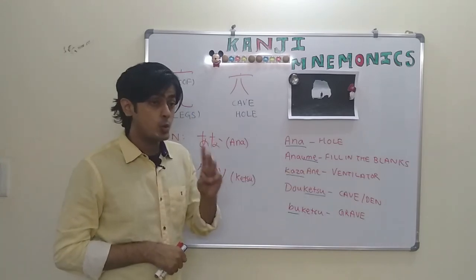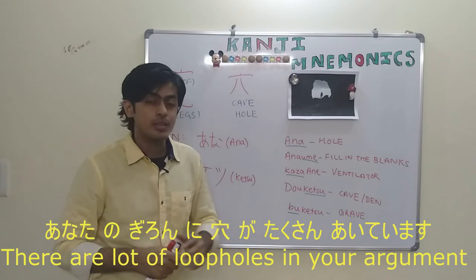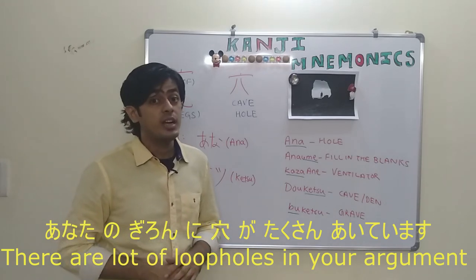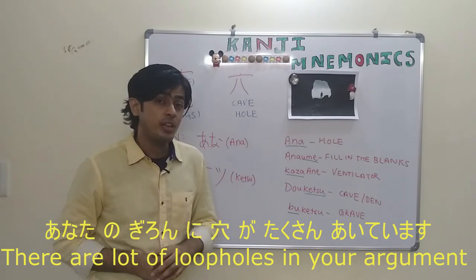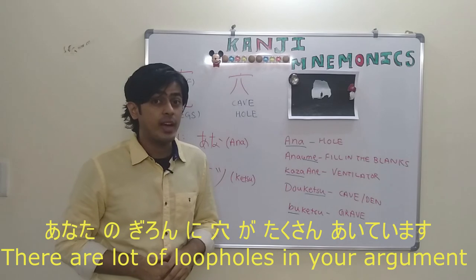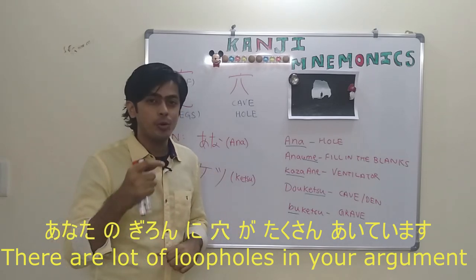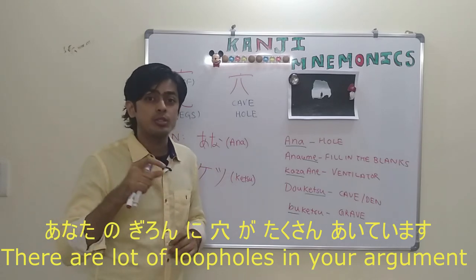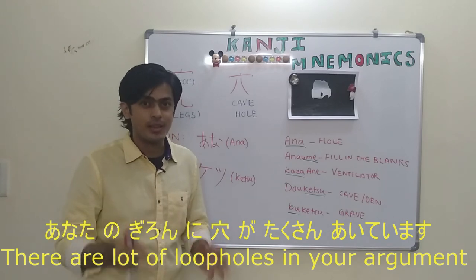Third sentence that we can make using the word ana is: Anatano giro ni ana ga takusan aitemasu, which can be translated as a lot of loopholes exist. Aitemasu means exist.